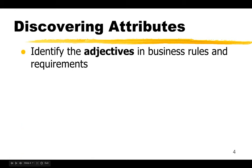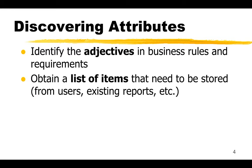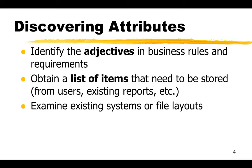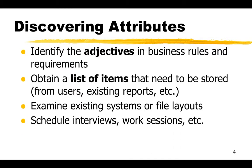How do you go about discovering attributes? Identify the adjectives in business rules and requirements, and look for things that describe or identify. Also obtain a list of items that need to be stored from users, existing reports, etc. You'll be surprised as you look at different things and talk to people.